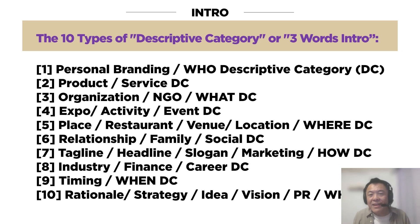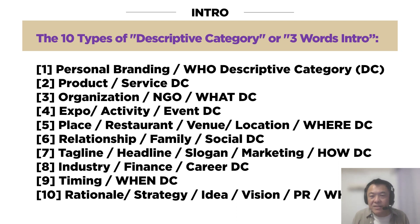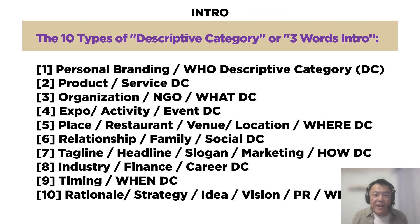You can use it for your personal branding, which is the WHO. You can use it for your product and service, which is probably the most common usage. You can use it for organization, NGO — this is the WHAT DC. You can use it to describe expo or activity or event. You can also use the WHERE DC to describe location and venue.